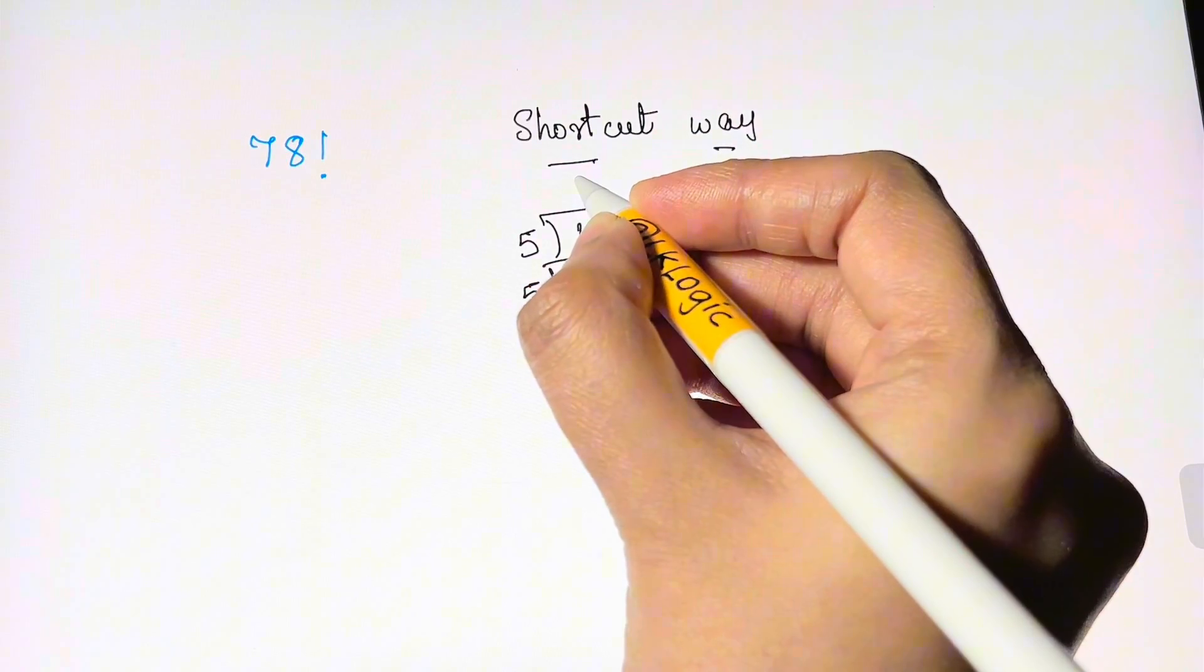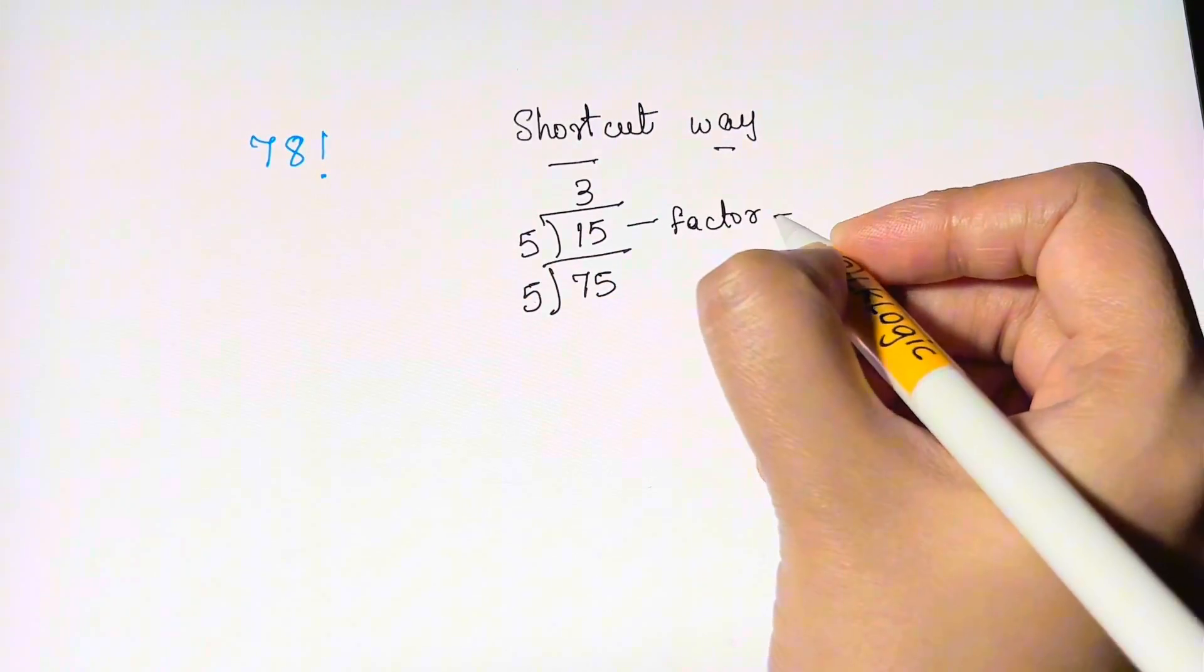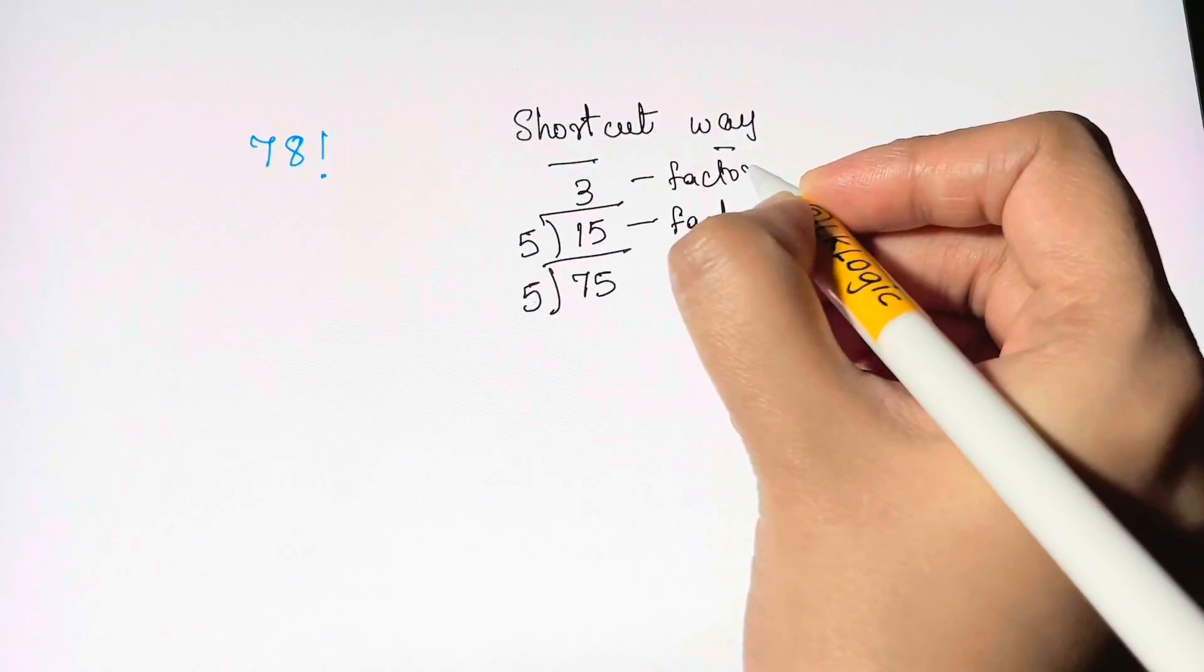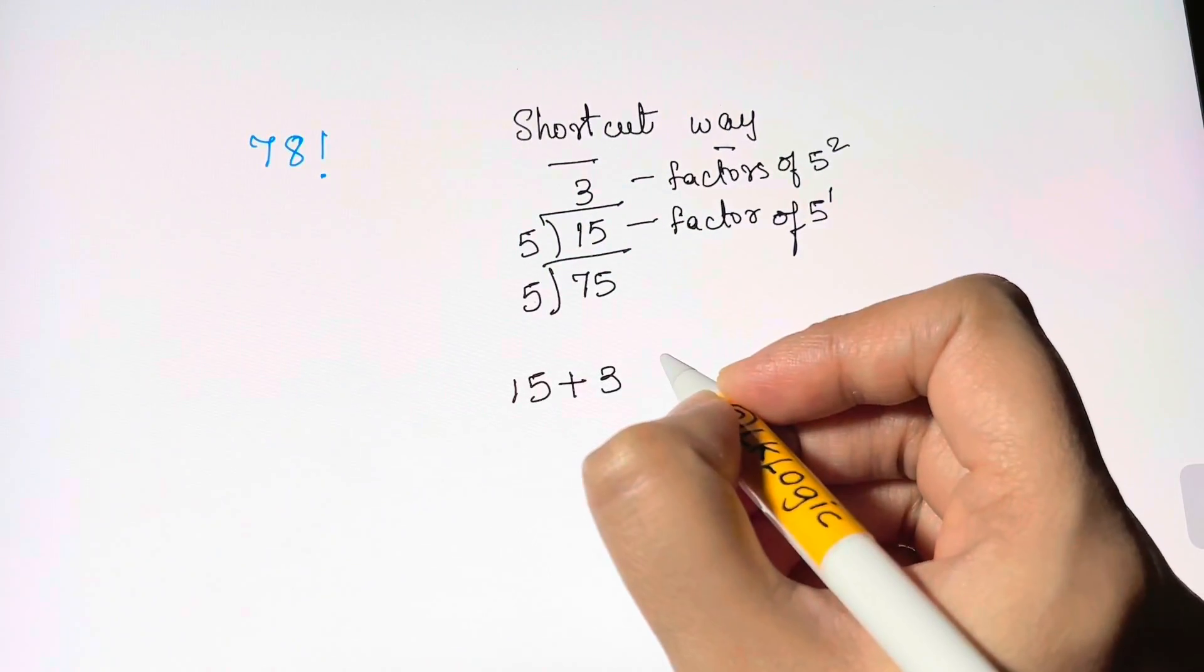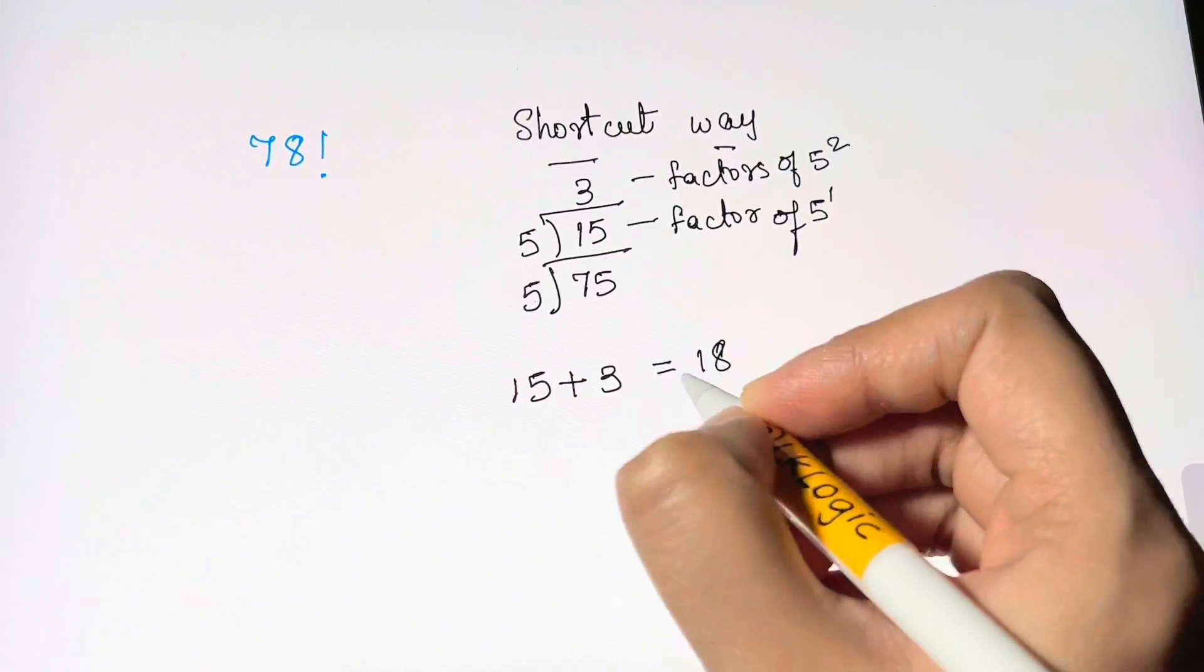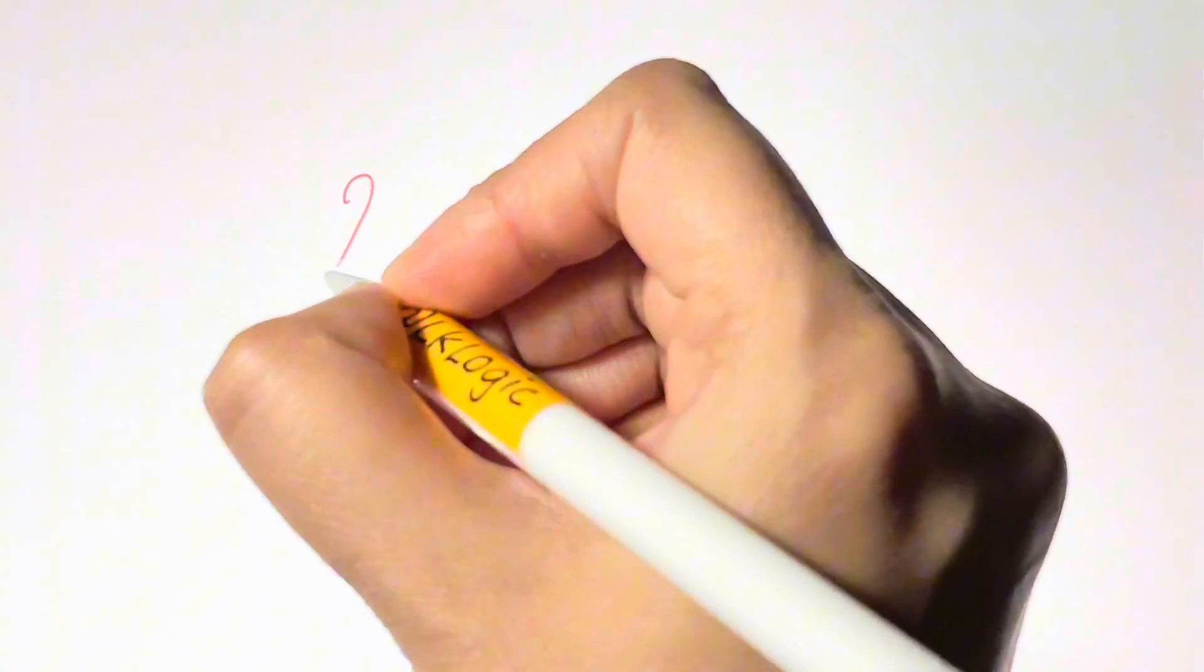So we have 15 which has at least one factor of 5, and 3 which has two factors of 5, that is they are divisible by 25. So let's add them up: 15 plus 3 equals 18. And so we have 18 trailing zeros at the end of 78 factorial.